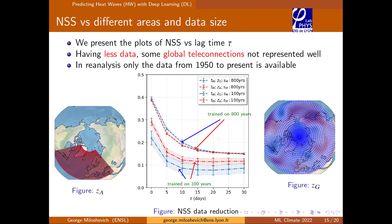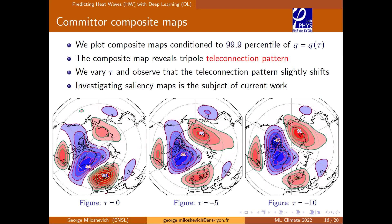We also want to know what the neural network looks at when making a prediction. We're working with a PhD student, Alessandro, using saliency maps. For now, I show composite maps: I take the mean conditioned only on data points where the network assigned a very high heat wave probability, for several values of tau. At tau equals zero, we see a triple structure in geopotential — positive anomaly over France, negative elsewhere — consistent with a blocking pattern correlated with summer heat waves.